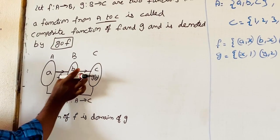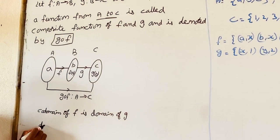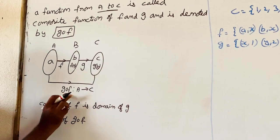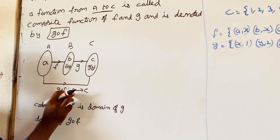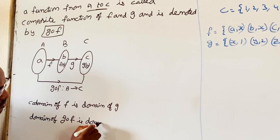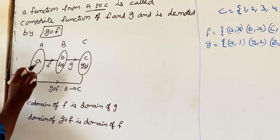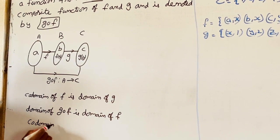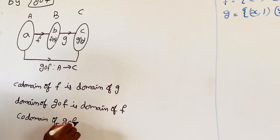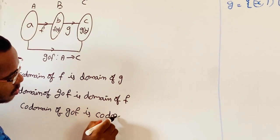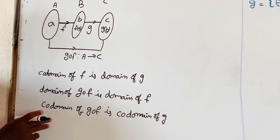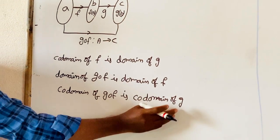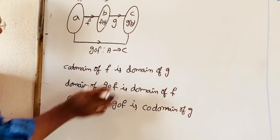This means co-domain of F is the domain of G. For G circle F, the domain is A, which is the same as the domain of F. The co-domain of G circle F is C, which is the same as the co-domain of G. So both are equal.